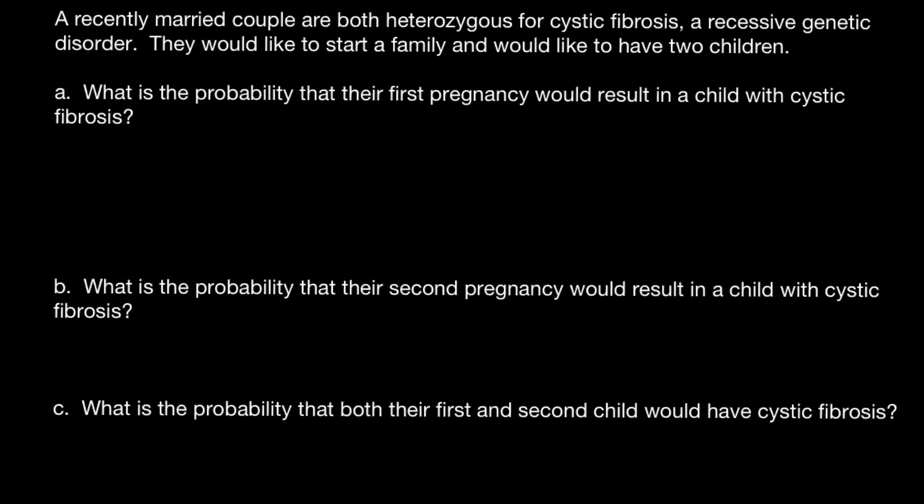This video is going to be about the law of probability and genetics. Today's problem is: a recently married couple are both heterozygous for cystic fibrosis, a recessive genetic disorder. They would like to start a family and would like to have two children. I recommend you stop the video here, try to solve each question on your own, and when you are ready you can run the video again and compare your answer with my answer and explanation.